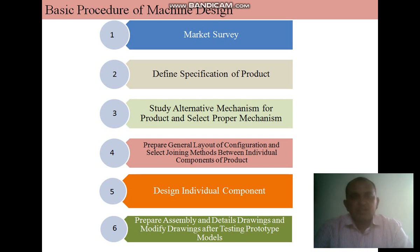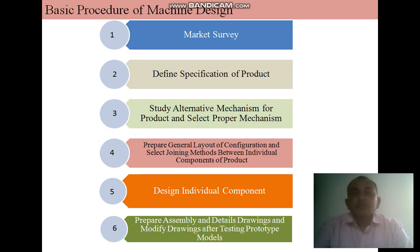The next step is to study the alternative mechanisms and select the proper mechanism for the products. After carefully studying the requirements, the designer prepares rough sketches of different possible mechanisms, considering the different linkages and mechanisms available. The aim is to select the proper and simple mechanism for the application, as simplicity plays a major role in the development of any machine component.